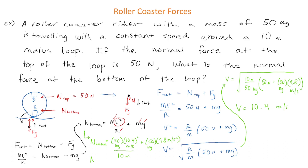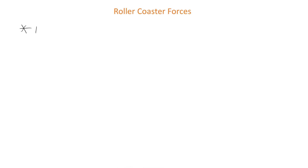The normal force at the bottom of the loop is equal to 1031 newtons. Notice how much larger the normal force is at the bottom of the loop compared to the top — that's why the rider would feel so much heavier at the bottom.